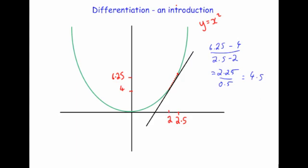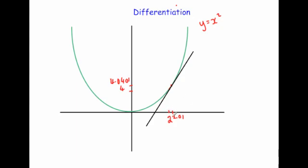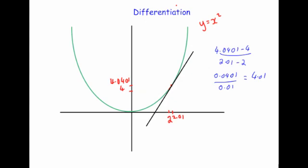Let's make the chord even closer — going a tiny distance across, from 2 to 2.01. 2.01 squared is 4.0401. The gradient is 4.0401 subtract 4, over 2.01 subtract 2, which gives 0.0401 divided by 0.01, equal to 4.01. As you look at the gradient of these chords — 5, then 4.5, then 4.01 — as you bring the point closer and closer, the gradient gets closer and closer to 4. So the gradient of the tangent is equal to 4.